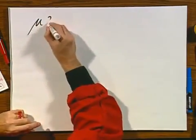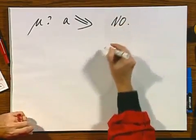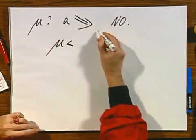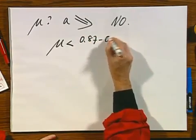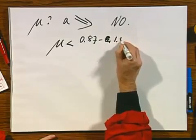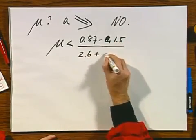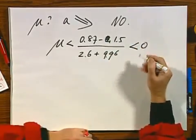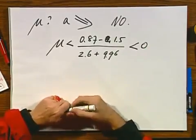Is it possible somehow that if we adjust mu that a would be in this direction? And the answer is no, because if you look at our criterion what mu should be for a to go down, then you would need 0.87 minus 1.5 divided by 2.6 plus 9.96, and this is smaller than zero, this is negative, and so this has no physical meaning, and so this is not meaningful.